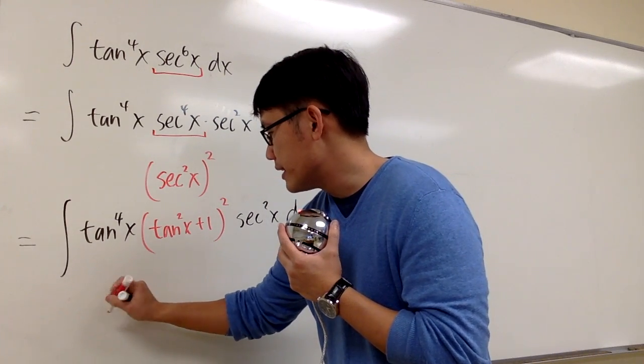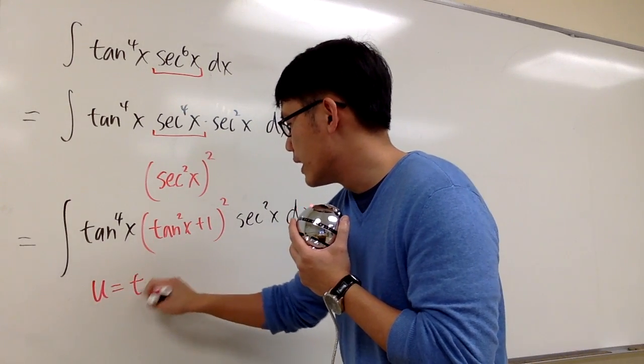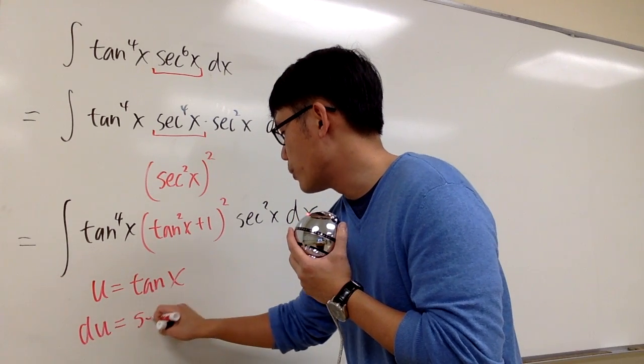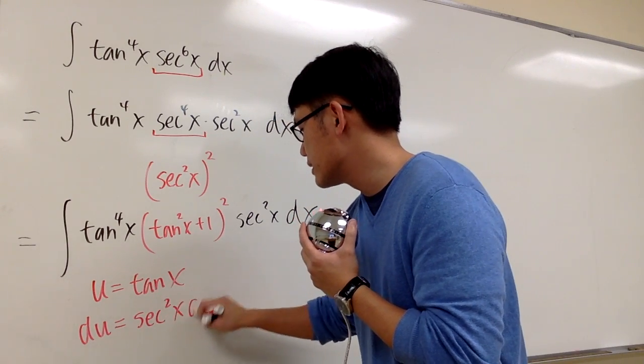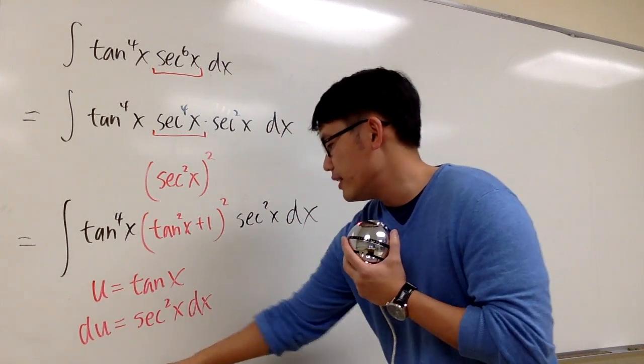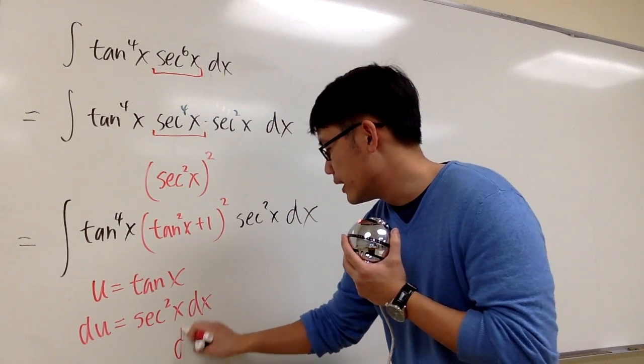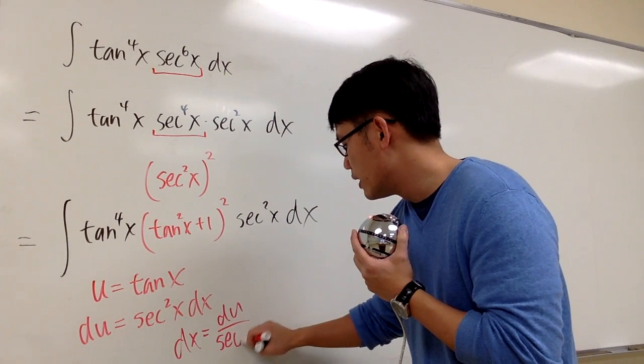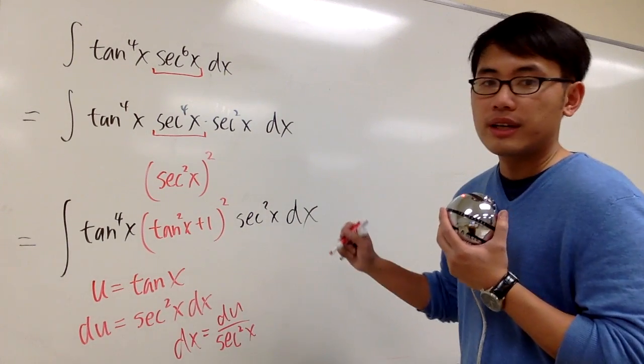So I will begin by saying that u equals to tangent x, so I get du, and that will be secant squared x dx. And if you would like, you can isolate dx, which is going to be du over secant squared, and this and that will cancel each other out.